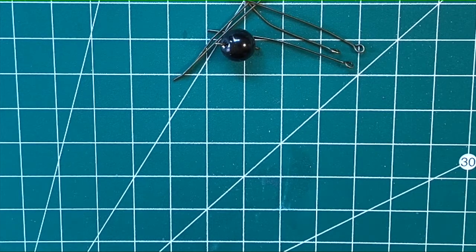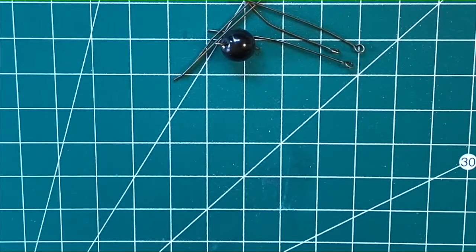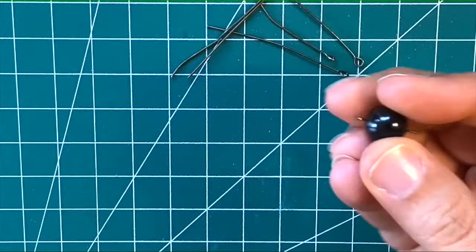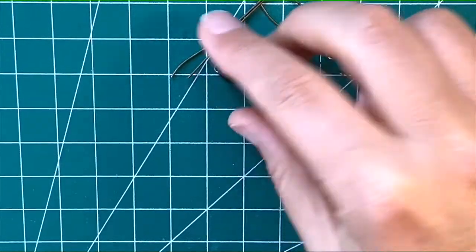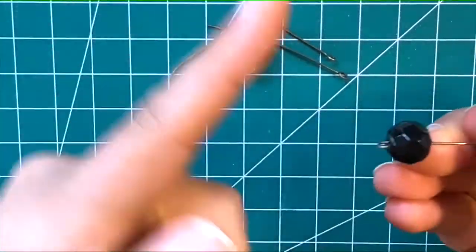The first thing we're going to do is put our eye pins into our beads and get those ready for construction. We're just going to create something very similar to this - take one of your eye pins and put it into the bead.